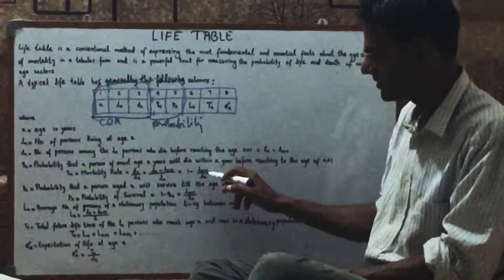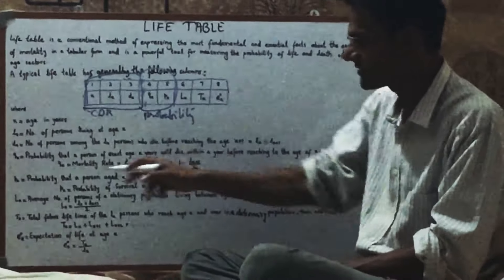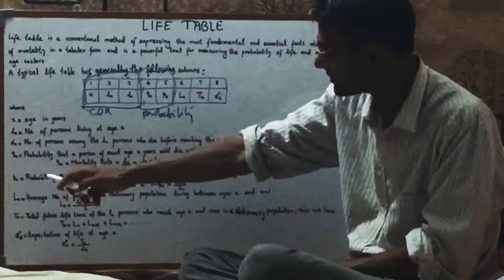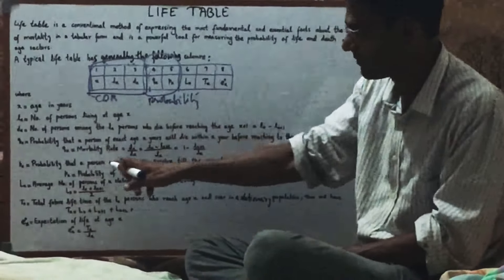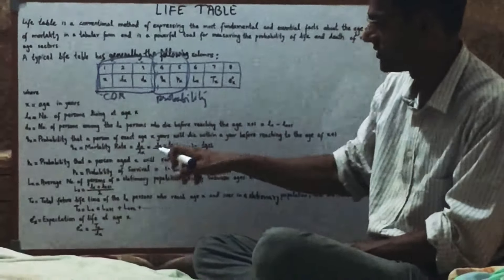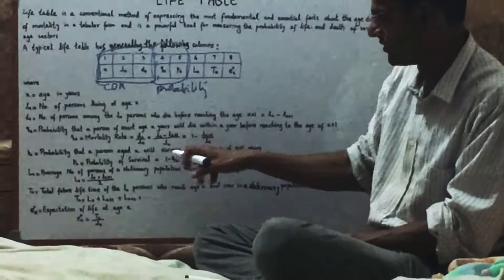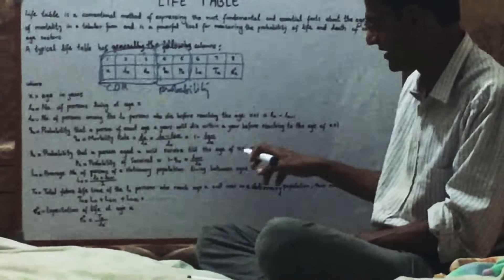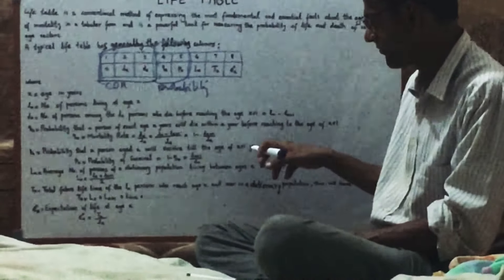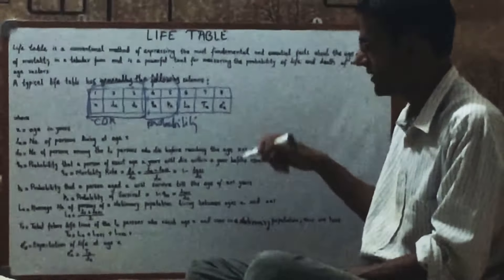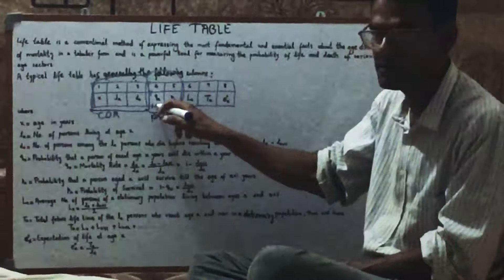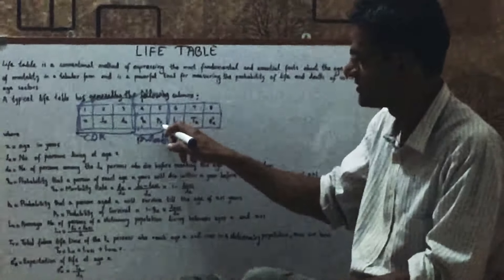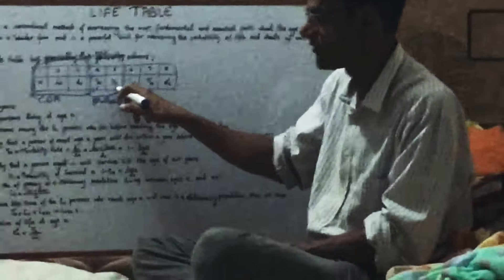This can also be written as 1 minus LX plus 1 divided by LX. PX is the probability that a person of age X will survive to age X plus 1. This is the survival rate property, while QX is the death rate property.